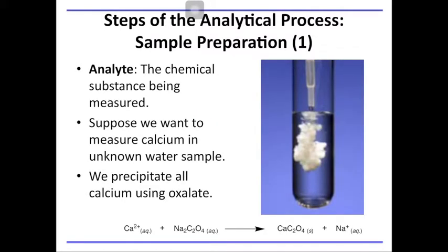Let's have more examples. In analytical chemistry, we refer to the chemical we want to measure as the analyte. Suppose we want to measure the amount of calcium ions in a river. The first thing we have to do is sampling — we take representative samples of water from the river. Next, we prepare the sample to make the analyte accessible for measurement. Take note that calcium ions are dissolved in the water sample and cannot be measured directly. So, what we need to do is precipitate the calcium ions using an oxalate salt. By adding sodium oxalate, we form calcium oxalate crystals or precipitate.